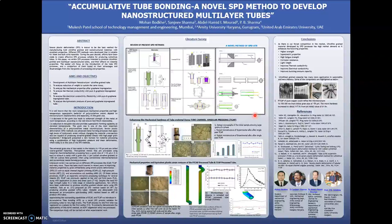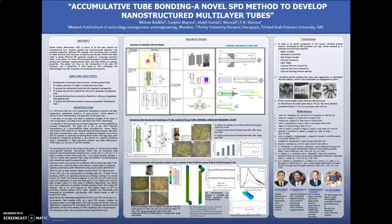Once this tube is developed, it will be used for many applications like boiler applications, thermal equipment, and hydraulic applications. Many researchers have worked on tube channel angular pressing, equal channel angular pressing, high pressure torsion, accumulative roll bonding, and many more SPD methods.